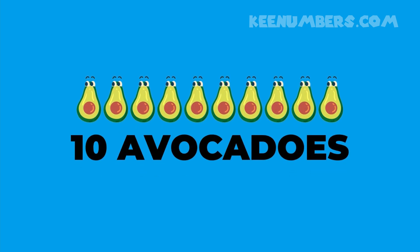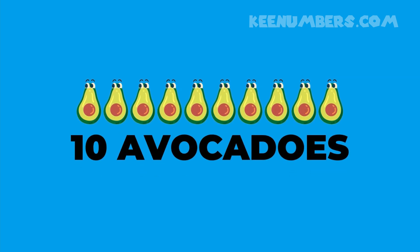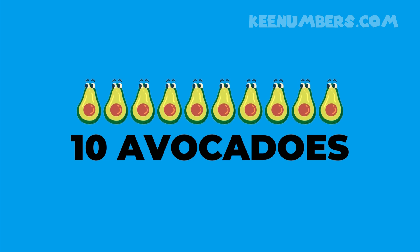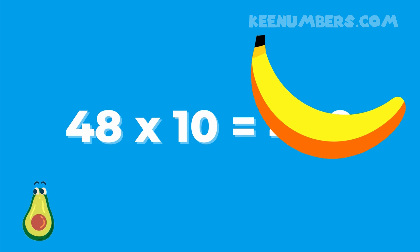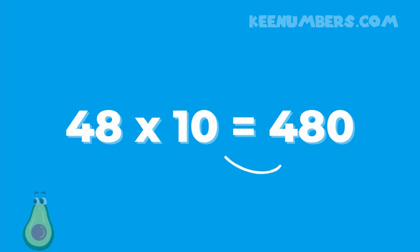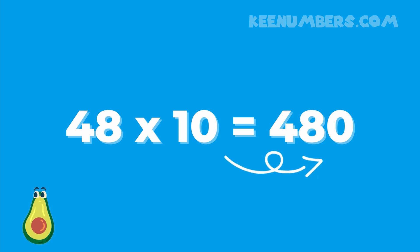Let's talk about multiplying avocados. First we're going to establish that we have 10 avocados: 2, 4, 6, 8, 10. And then we're going to multiply by 10. 48 times 10 — what in the world, banana? 48 times 10 is not banana, get out of here banana. We want to know what 48 tens are. I'm going to go ahead and tell you the answer: it's 480.